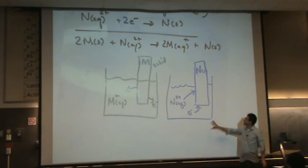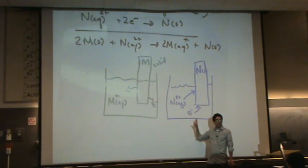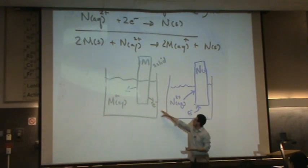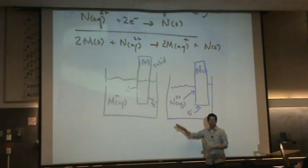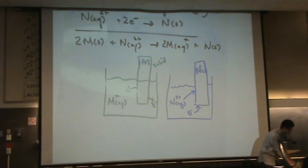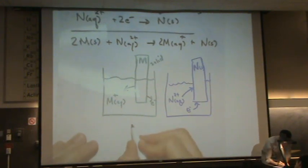So what we're going to do is we're going to put both of these half reactions together in what's called an electrochemical cell. We're going to put them together and we're essentially going to make a battery. So these are half cells.